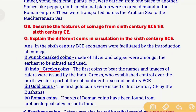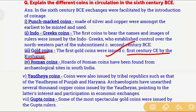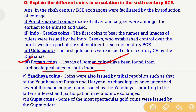The second coin is Indo-Greek coins — these were the first coins to have the king's name and image on them, issued by Indo-Greek rulers who ruled in the northwestern part of the Indian subcontinent during the 2nd century BCE. The third important coin is gold coins, issued by Kushana rulers around the 1st century CE. The fourth is Roman coins — archaeologists found Roman coins at several archaeological sites in South India, indicating that Indian traders had trade relations with the Roman Empire. The fifth type was coins issued by tribal republics, such as the Yaudheyas of Punjab and Haryana — archaeologists found thousands of copper coins issued by the Yaudheyas during excavations.